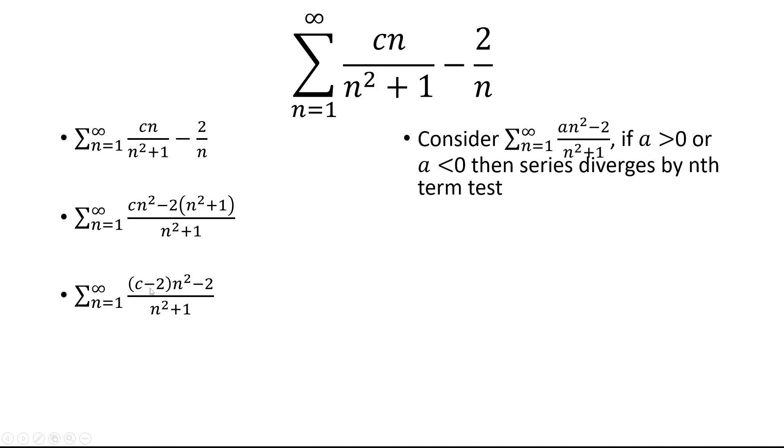So one problem here is why don't we just let c minus 2 be another constant just to make things easier. And this step is optional. So let's say a is positive in this case or if a is negative. Regardless, the series is going to diverge by the nth term test.